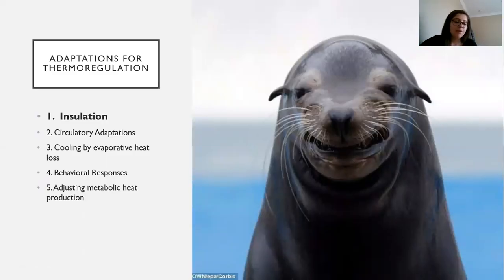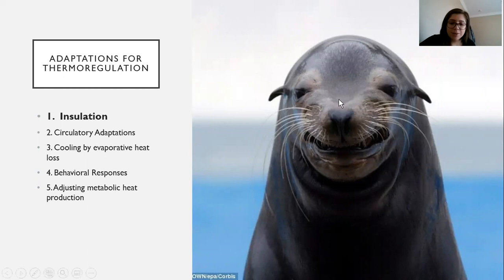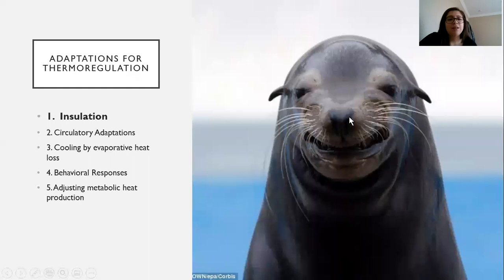Now let's talk about the adaptations for thermal regulation. The first is insulation. This very happy sea lion can stay warm in the cold ocean largely due to the insulation carried in blubber or fat, which keeps him warm. Insulation is seen in blubber, skin, feathers on birds, and also hair.